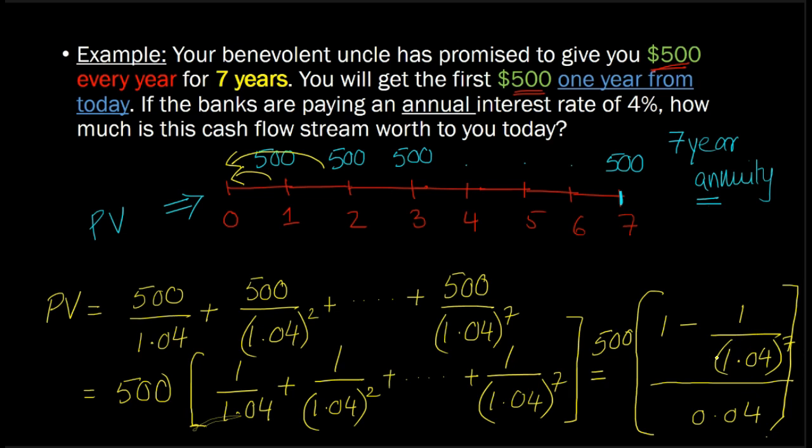And then whatever that solves out to, you will take that number and divide it by 0.04, and then multiply by 500. When you do this math, all of this expression will solve out to approximately $3,001 and about 2 cents.